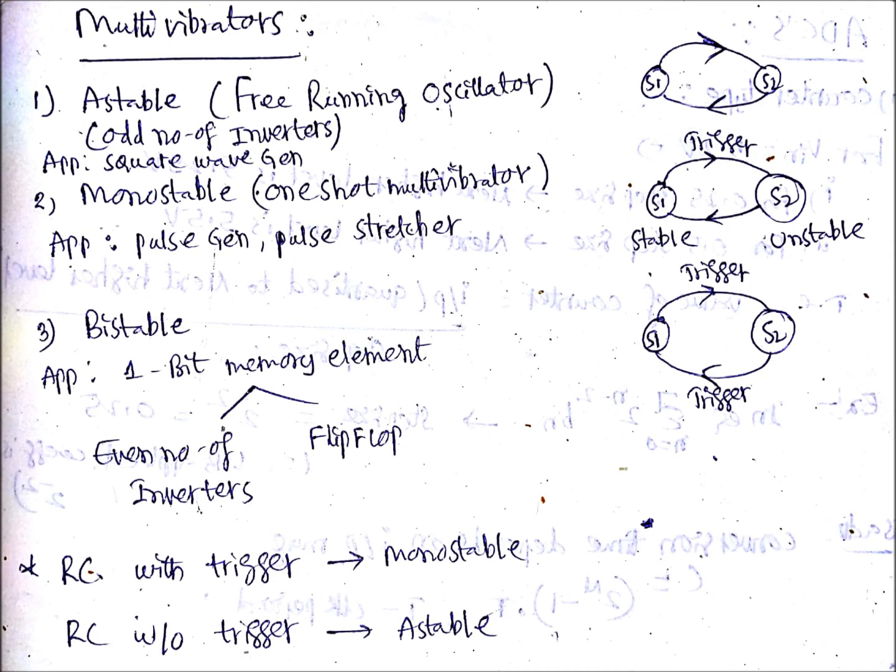In questions they will give you one circuit and ask you to decide whether it is monostable, astable, or bistable. Suppose if they have given one RC circuit with a trigger pulse, you can tell it as monostable. If there is no trigger, it is astable.